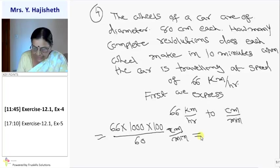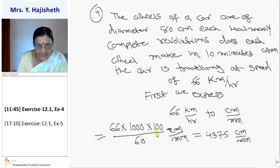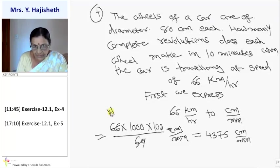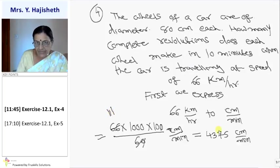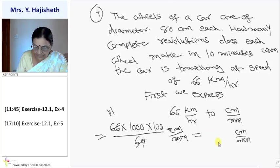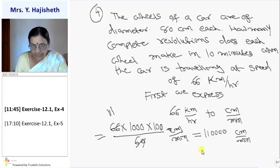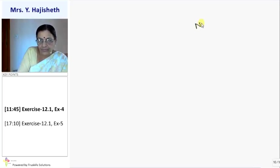To convert to centimeter per minute, multiply 66 by 1000 to get meters, then by 100 to get centimeters, then divide by 60 to convert hour to minutes. Calculation gives 110,000 centimeter per minute. R is given as 40 centimeter because diameter is 80.